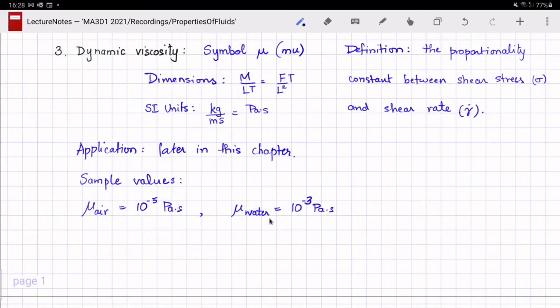The third property is the fluid dynamic viscosity or simply the viscosity. It's denoted by the Greek letter mu and is defined as the proportionality constant between the shear stress sigma and the shear rate gamma dot.